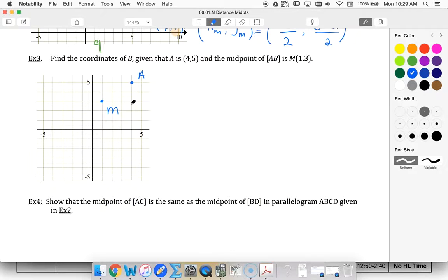To get to M, I went down 2 over 3. So I must do that again, because it's right in the middle. So B must be here. I could use my logic to tell me (-2, 1).